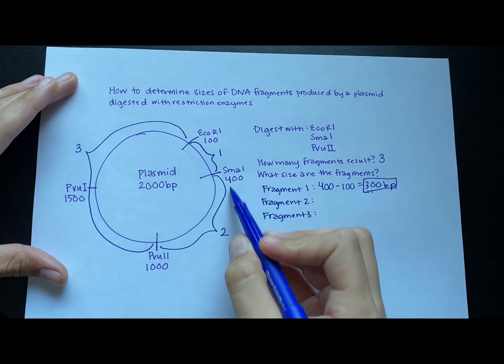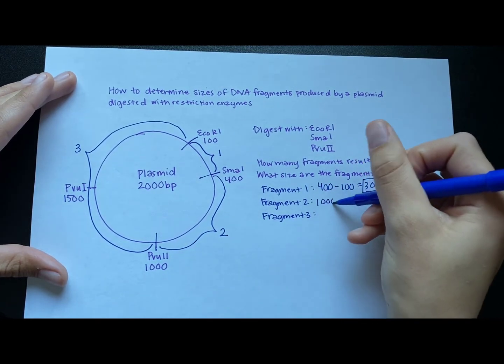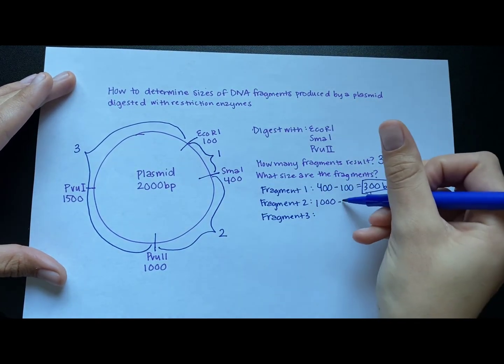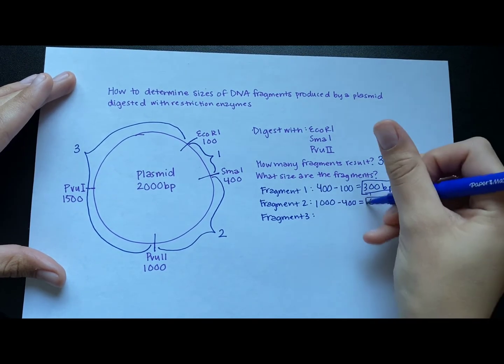Fragment two exists between these two different sites, between SMA-1 and PVU-2. So again, find the difference. 1,000 minus 400 gives you 600 base pairs. And I'll make a prettier box around this one.